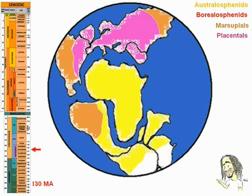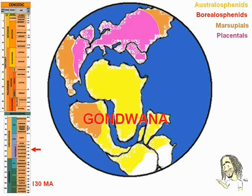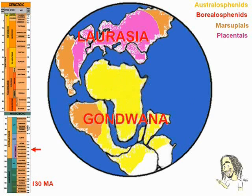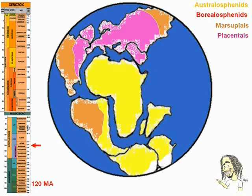130 million years ago, the continents of the south were totally separated from those of the north, forming a landmass known as Gondwana, while the north landmass is called Laurasia. The mammals diversified in this period, but we were still in the dinosaur age, and the mammals were mostly nocturnal, with shrew shape, and very small, with rare exceptions not larger than a badger.